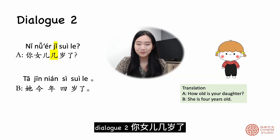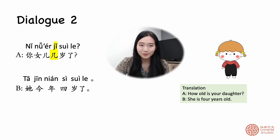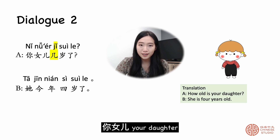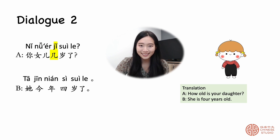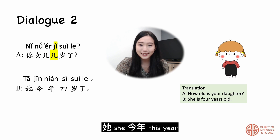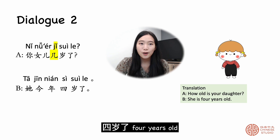Dialogue 2. 你女儿几岁了? 她今年四岁了。 你女儿 — your daughter. 几岁了? — How old? 她 — she. 今年 — this year. 四岁了 — four years old.